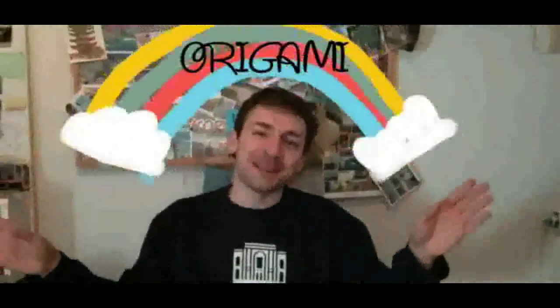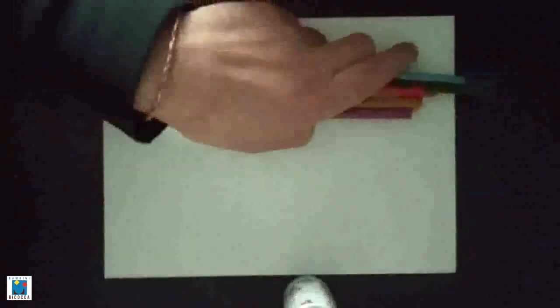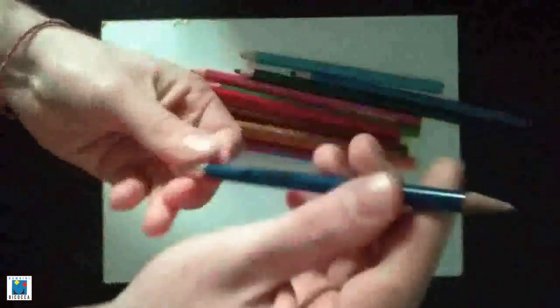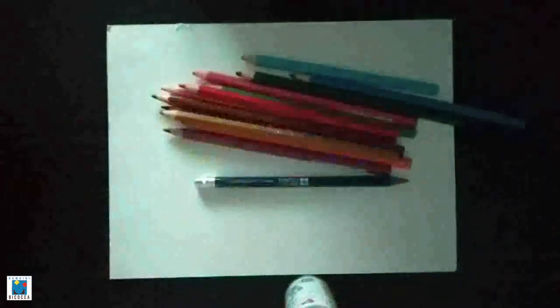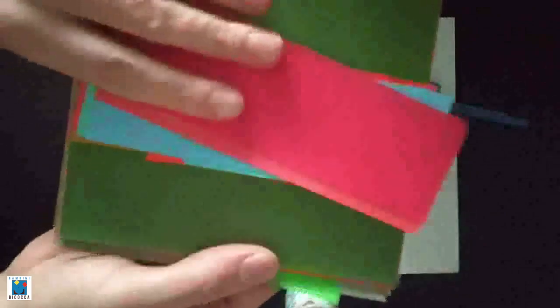Welcome to Origami with Petal and today we're going to learn to make a fish. Before we get started, make sure you have some white paper, glue, color pencils, a gray pencil and, of course, some origami paper.